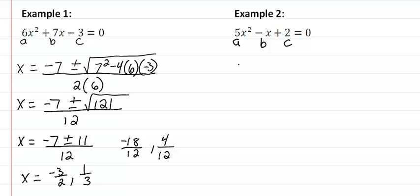So x will equal opposite of our b plus or minus the square root of b squared minus four times our a times our c all over two times our a.